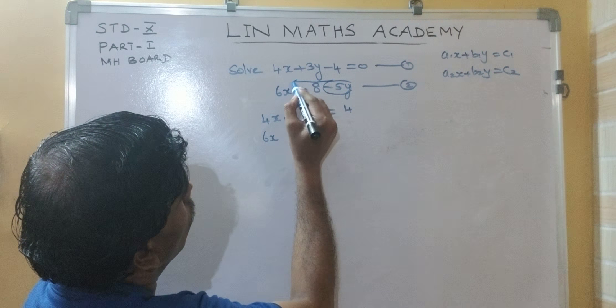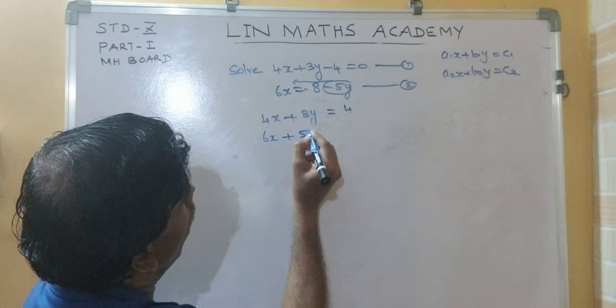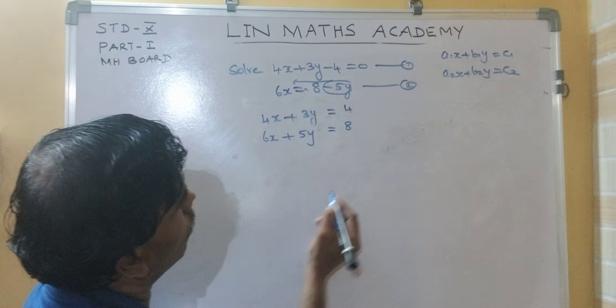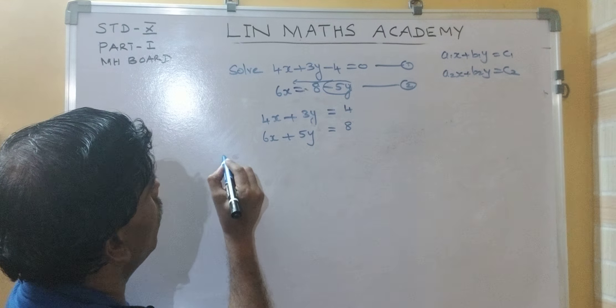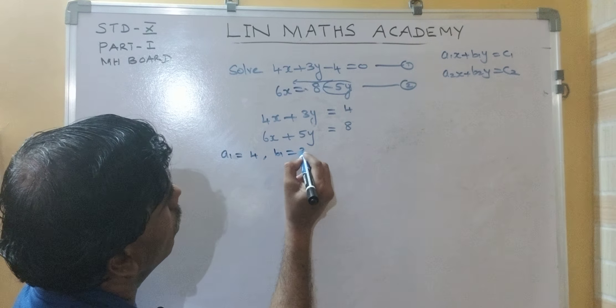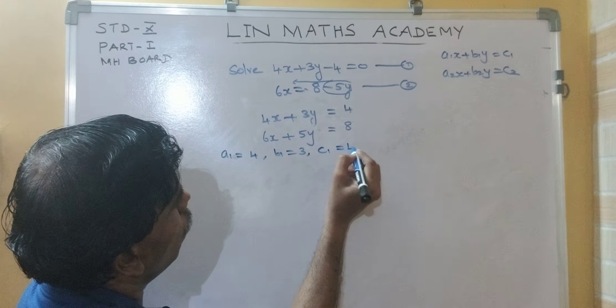You take this here, plus 5y equal to 8, right. So, what is a1 here? 4, b1 3, c1 4.